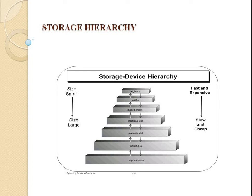Main memory communicates directly with the CPU. It is a relatively large and fast memory used to store programs and data during processor execution. The principal technology used for main memory is based on semiconductor integrated circuits. It is volatile memory, meaning stored information remains valid only as long as power is applied.